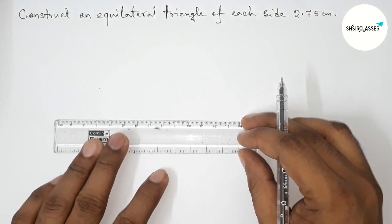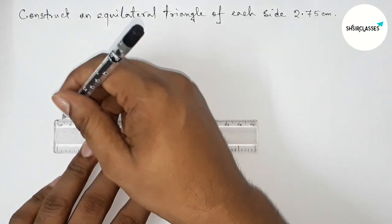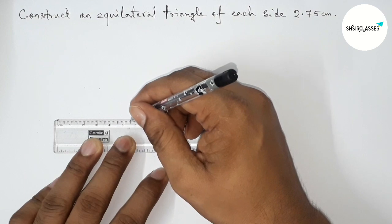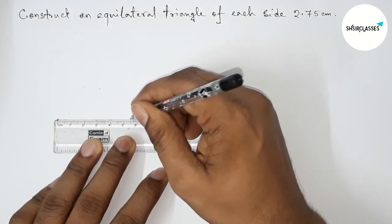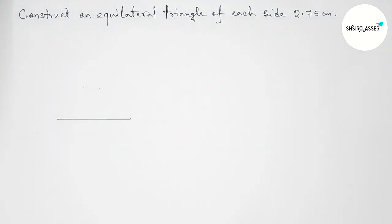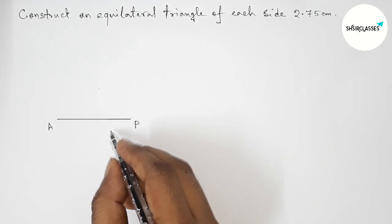First of all, let us draw here a line segment of length 5.5 centimeters. First pointing out here 0 and this is 5.5 centimeters. Drawing here a line segment of length 5.5 and taking here A and P, so AP is 5.5 centimeters.